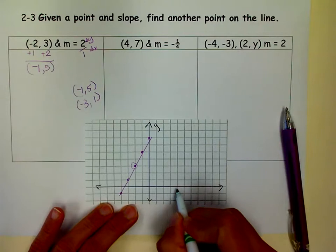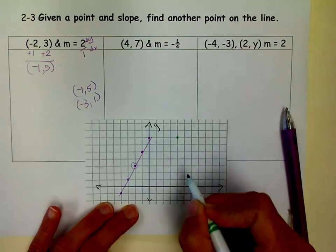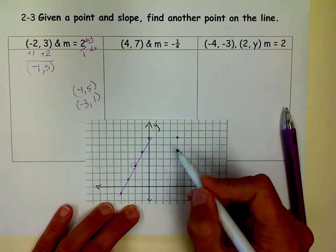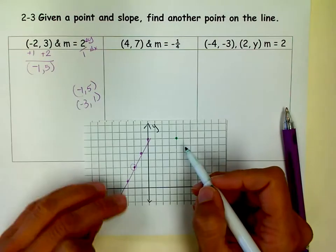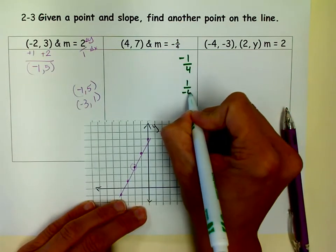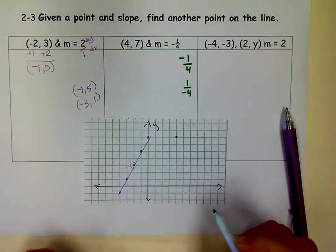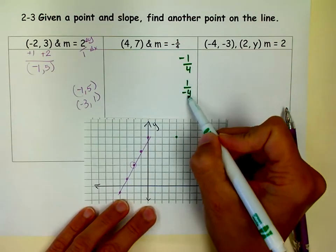We use a different color on my little graph. So 4, 7. There's my point. My slope is negative 1 fourth. Now it doesn't matter if you use the negative on the top or on the bottom. Either one will work. This one means down 1 right 4. This one means up 1 left 4.